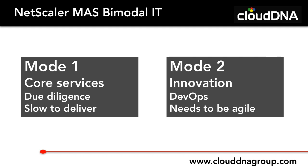Mode 1 is the traditional IT sense: Exchange services, SharePoint, CRM systems — things everybody uses on a daily basis. This requires due diligence, planning, network thought, and meticulous verification. While that's a good thing for maintaining service levels, it starts to slow down the actual delivery process. Not a huge issue for a lot of organizations, as we can plan around it.